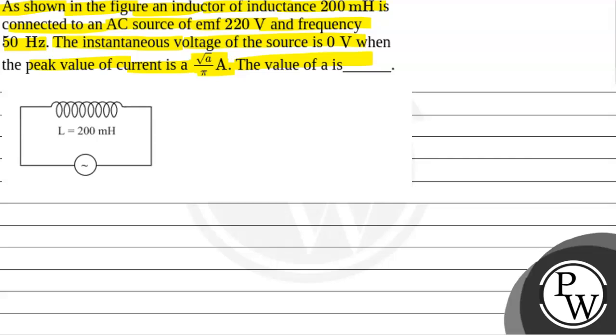First of all, we will see what key concept is used in this question. The key concept is inductive reactance XL equals ω times L, where ω is the angular frequency and L is the inductance of the inductor. Now we write ω as 2πf, where f is the frequency. So inductive reactance XL equals 2πfL.